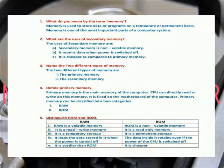Name the two different types of memory. The two different types of memory are primary memory and secondary memory. Define primary memory. Primary memory is the main memory of the computer. CPU can directly read or write on this memory. It's fixed on the motherboard of the computer. Primary memory can be classified into two categories.